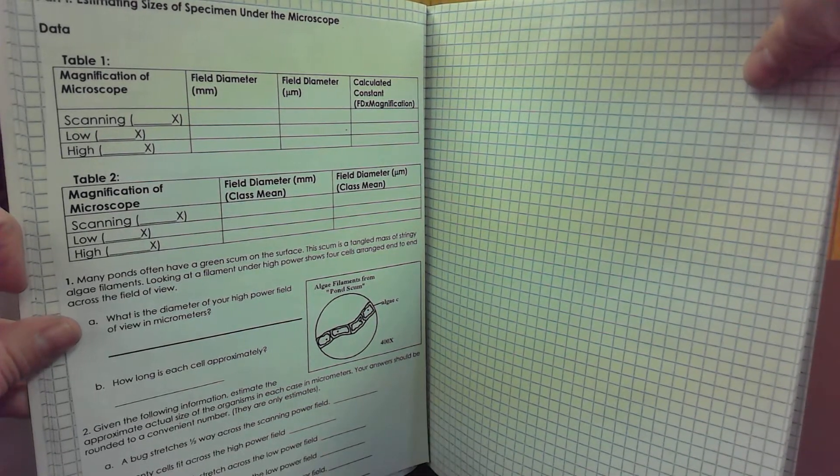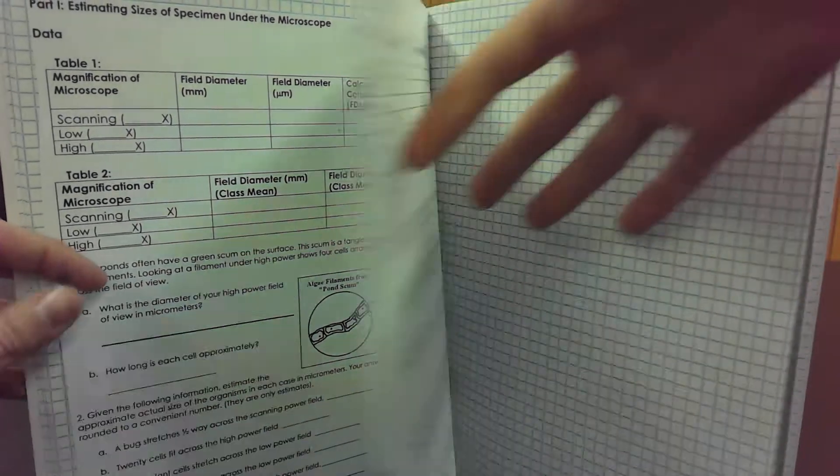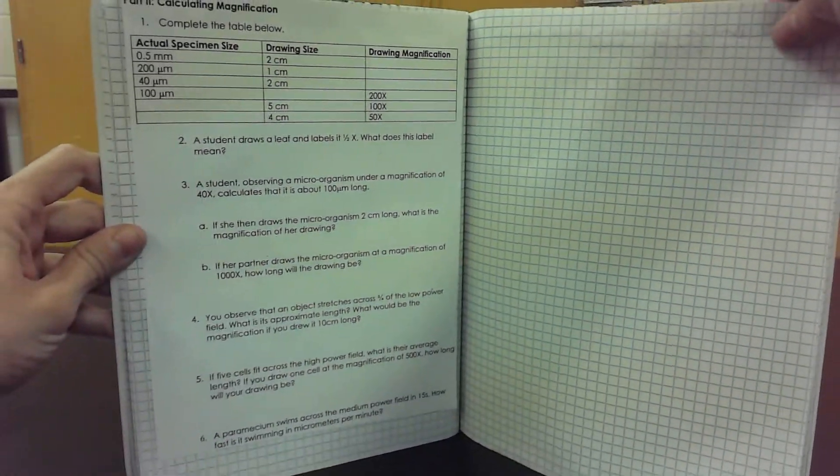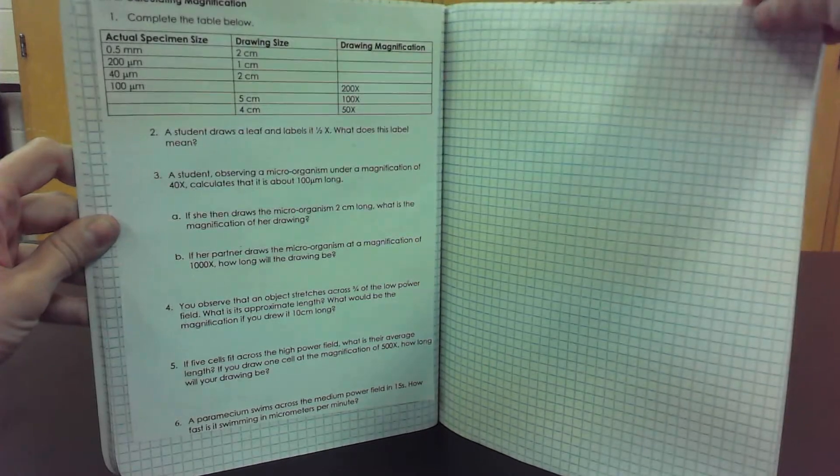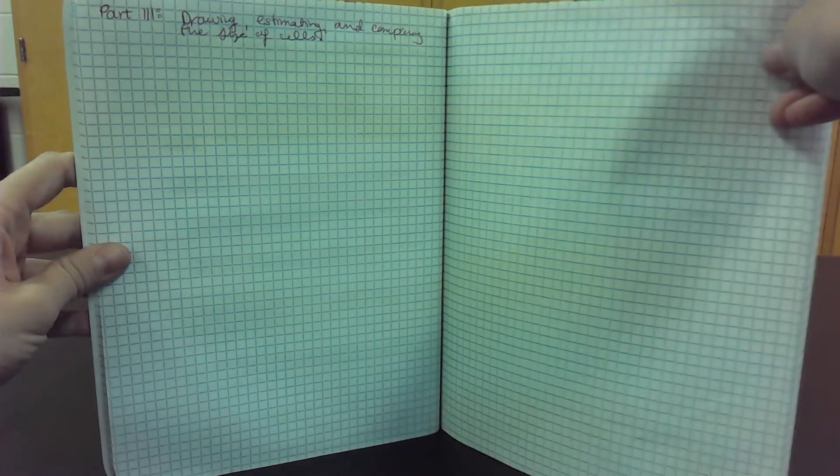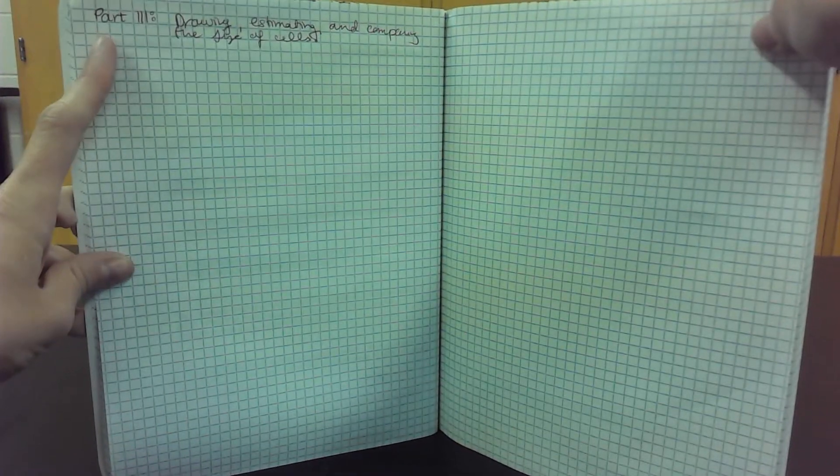Part one, part two. This next page, which I think is page seven, is blank, and you can title it 'part three'.